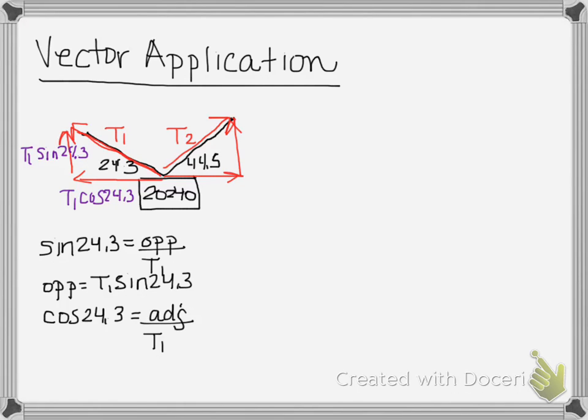And then we're going to have this similar calculation on the right side as well. Hopefully you can see how that would work out. This horizontal portion on the right is going to be T2 cosine 44.5, and then the vertical component is going to be T2 sine of 44.5.